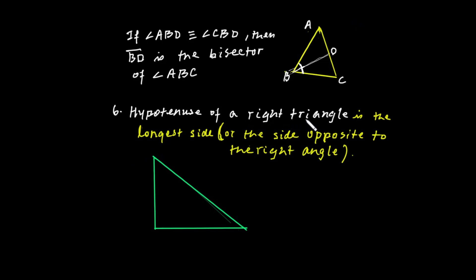The hypotenuse of a right triangle is simply the longest side of the triangle — the side opposite to the right angle.